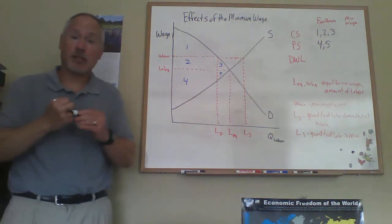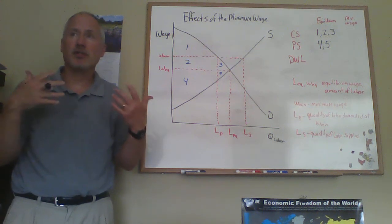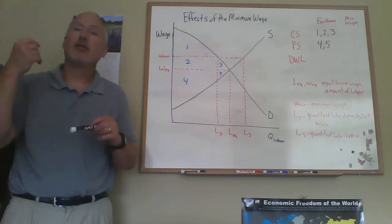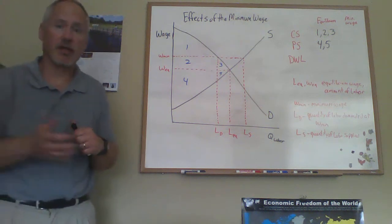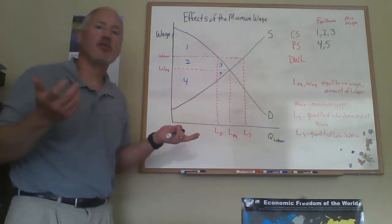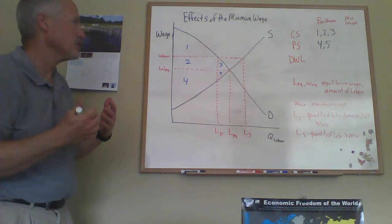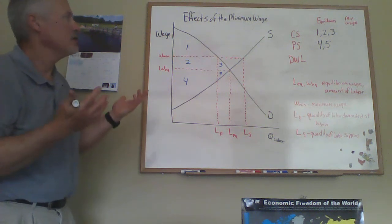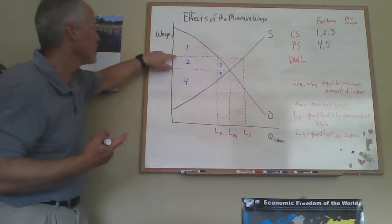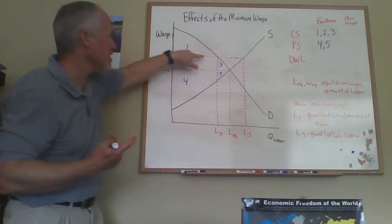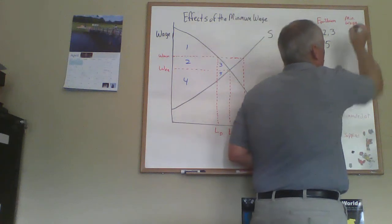Consumer and producer surplus here is a little bit backwards from what you might normally think, since this is an input market — the labor market. The producers in the labor market, the suppliers, are people — the workers. The consumers are the firms that are hiring workers. Now, consumer surplus with the minimum wage in place is the area below the demand curve and above the price, which is now W-min. That is just this triangle — area 1. So area 1 is the only area of consumer surplus with the minimum wage in place.